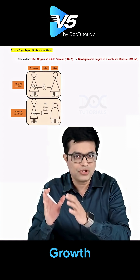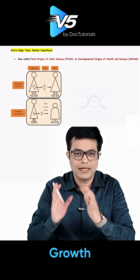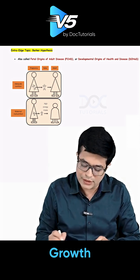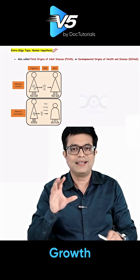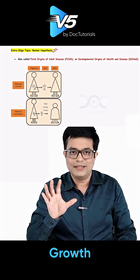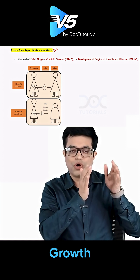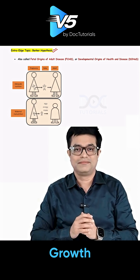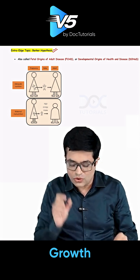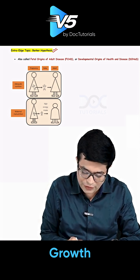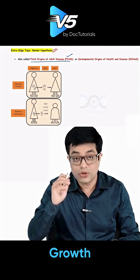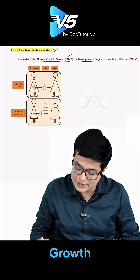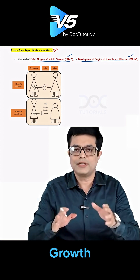This extra topic is briefly mentioned in both Ghai and Nelson and it is very relevant to the topic we are discussing. What is Barker's hypothesis? Barker's hypothesis basically says that fetal problems are responsible for adult problems. It is also called as fetal origin of adult disease, FOAD. It is also called as developmental origin of health and disease, that is DOHAD. These are the alternative names.